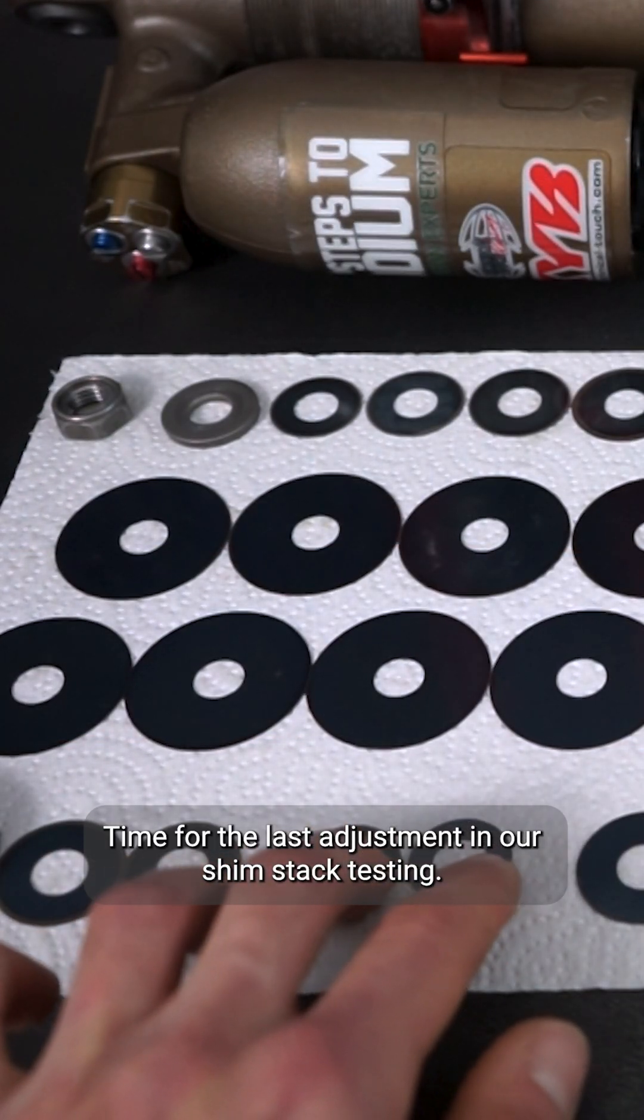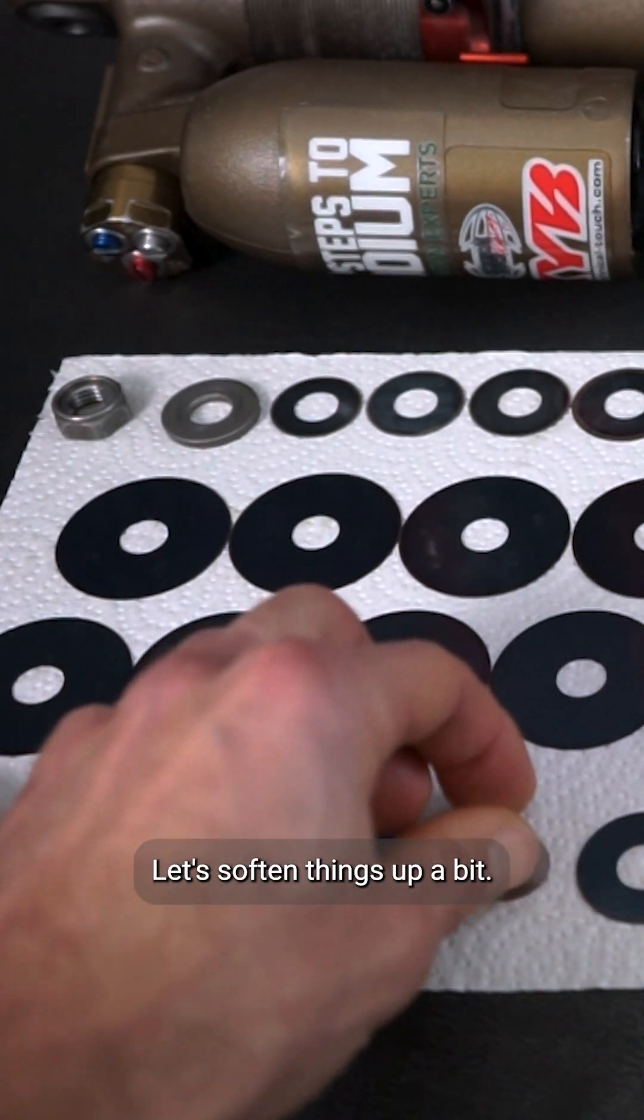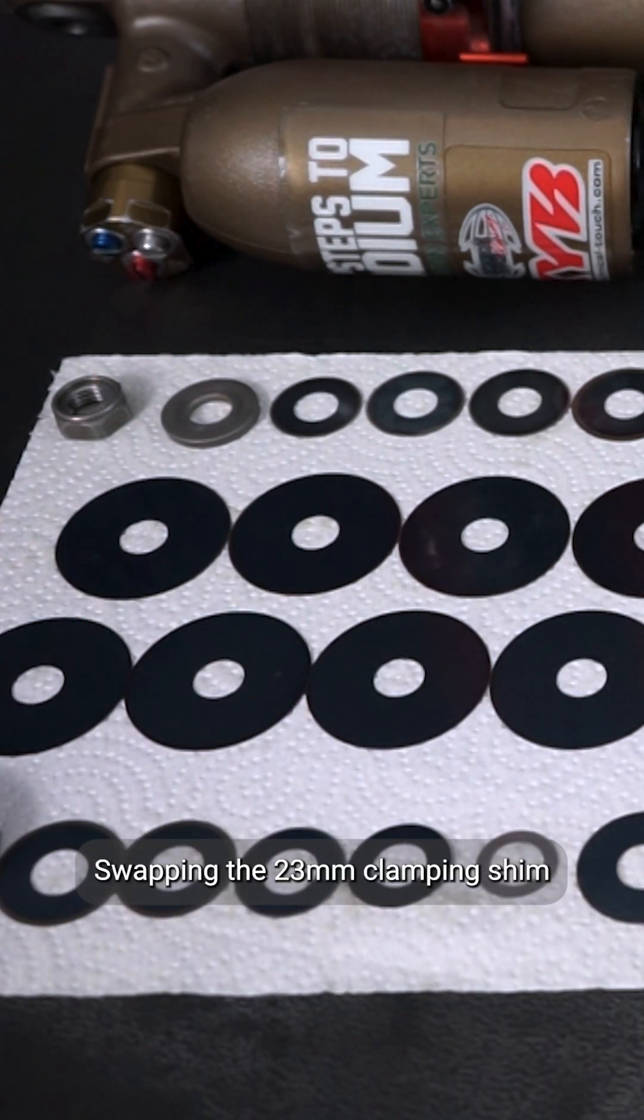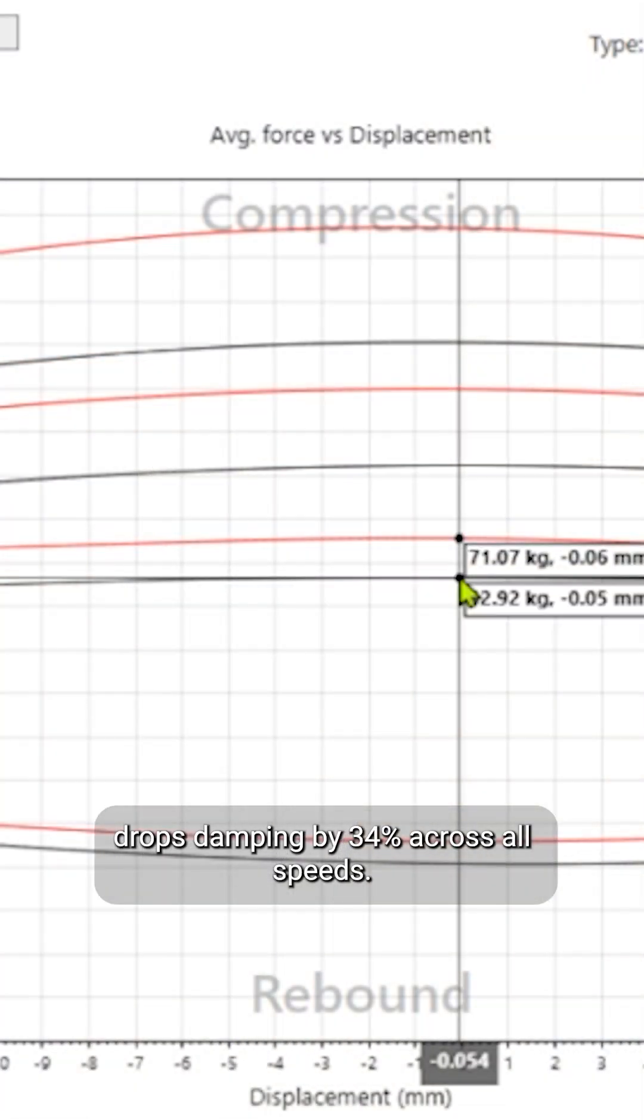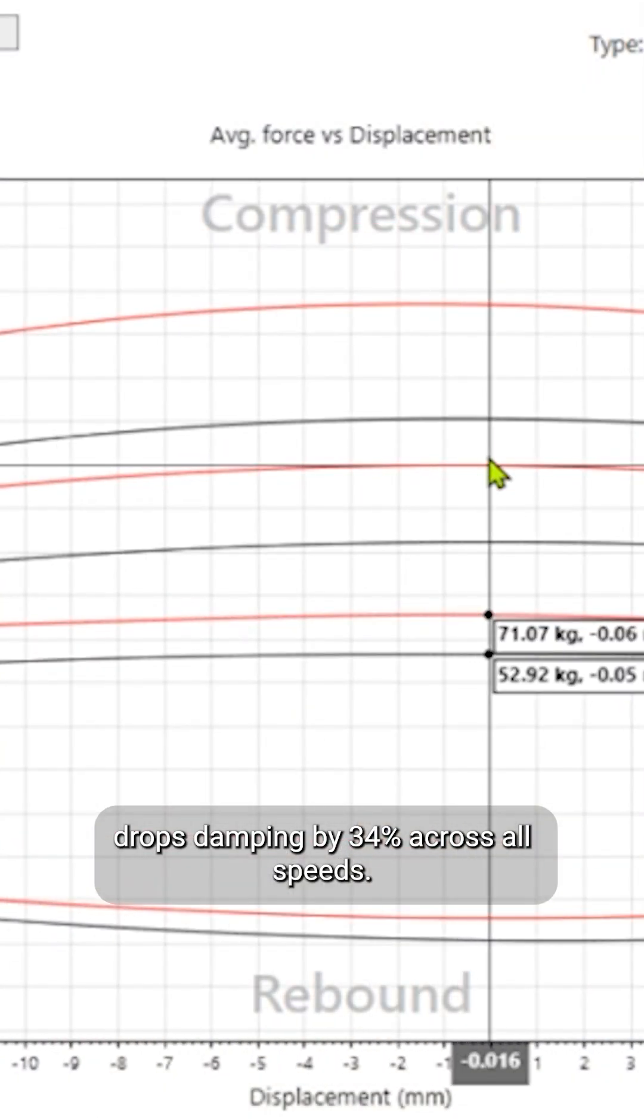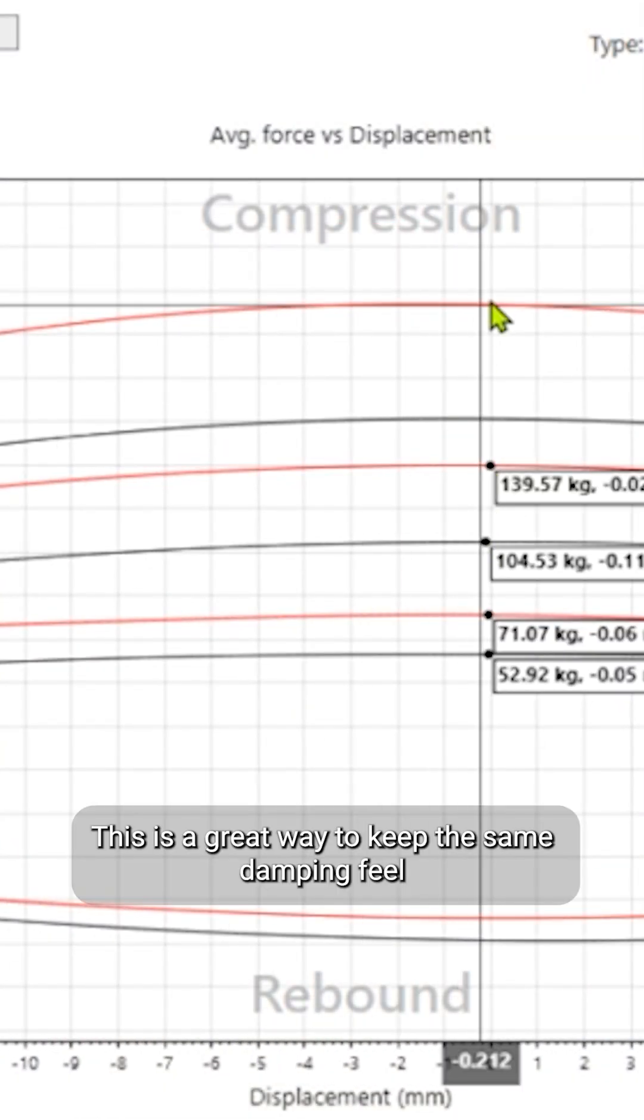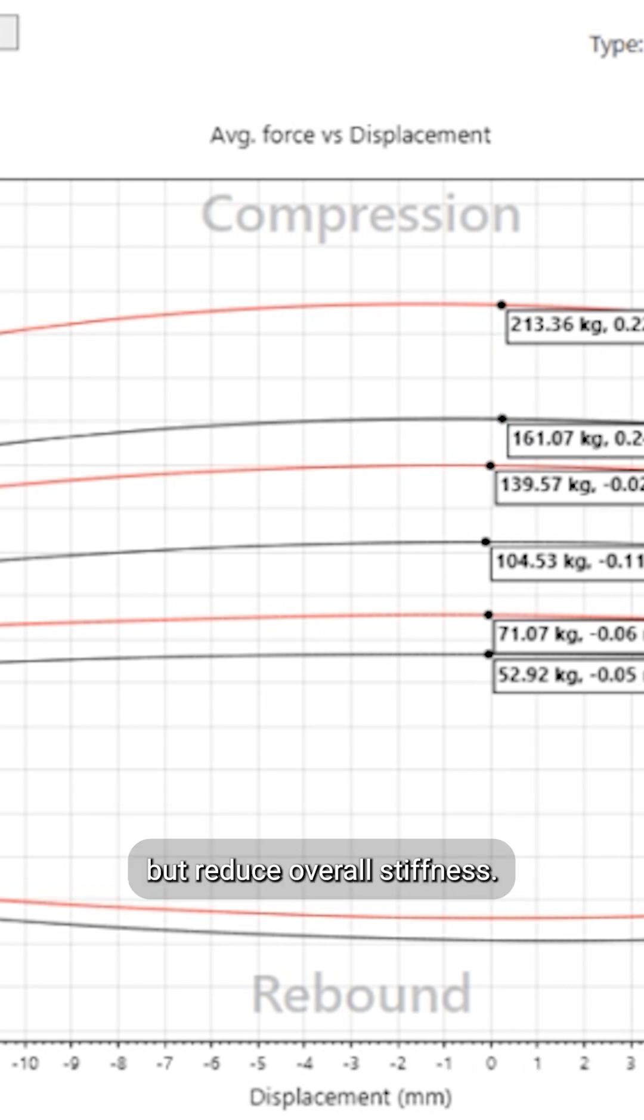Time for the last adjustment in our shim stack testing. Let's soften things up a bit. Swapping the 23mm clamping shim for an 18mm one drops damping by 34% across all speeds. This is a great way to keep the same damping feel but reduce overall stiffness.